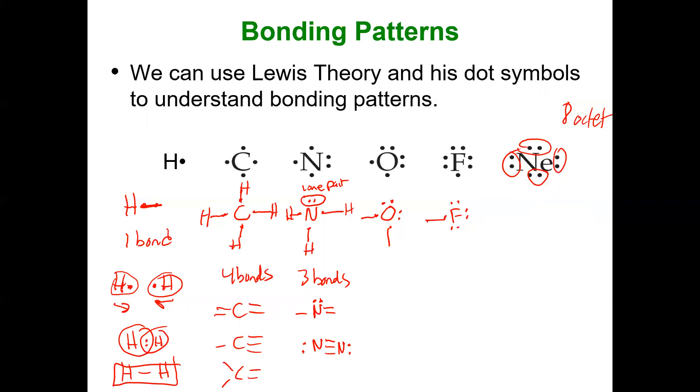Then oxygen likes to have two bonds. Why only two? Well, it already has two lone pairs. So it forms two bonds. It's two away from neon, like in H2O. Now the two bonds don't have to be two single. It can be a double, like in the case of the diatomic oxygen.